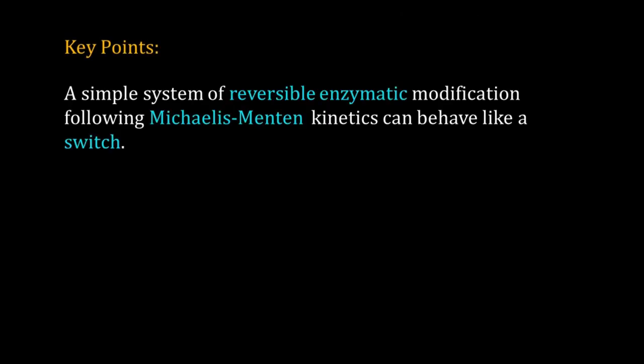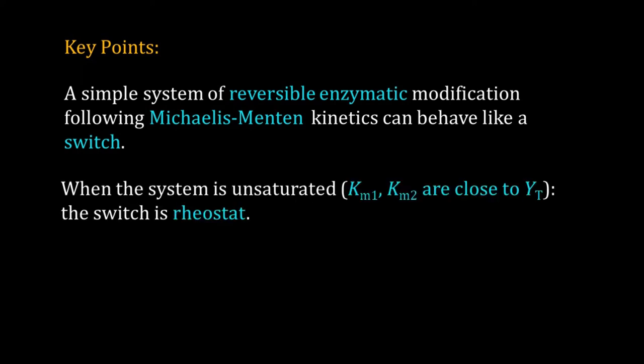So let me jot down the key points. A simple system of reversible enzymatic modification following the Michaelis-Menten kinetics can behave like a switch. When the system is unsaturated, that is K_m1 and K_m2 are close to Y_t, the switch is rheostat.